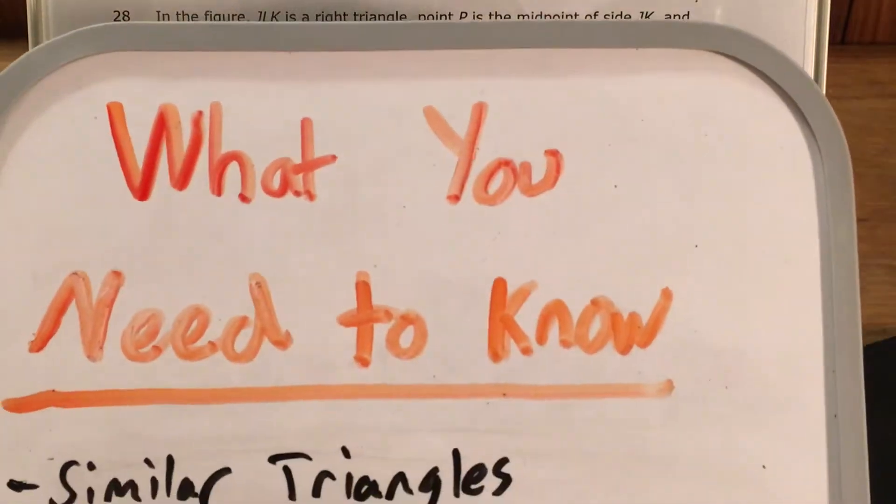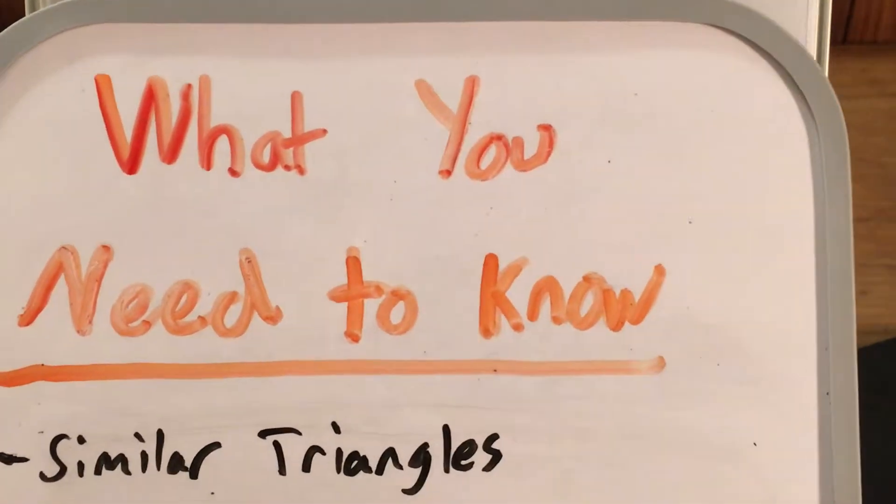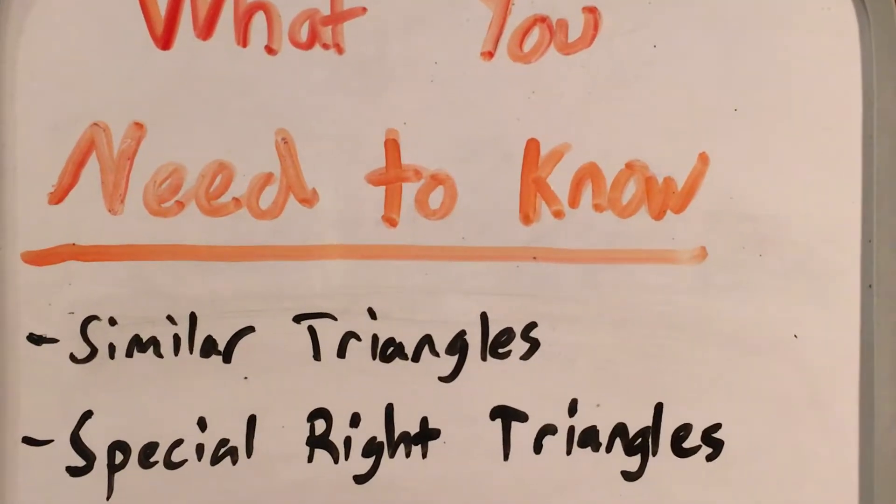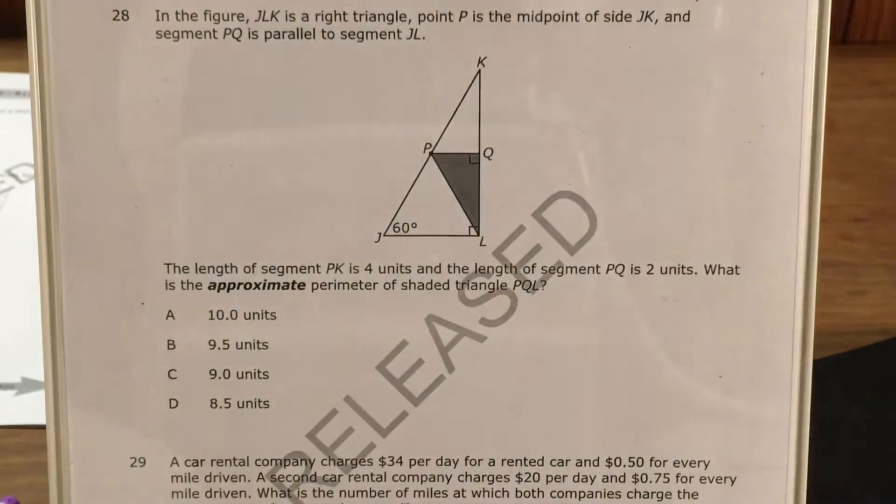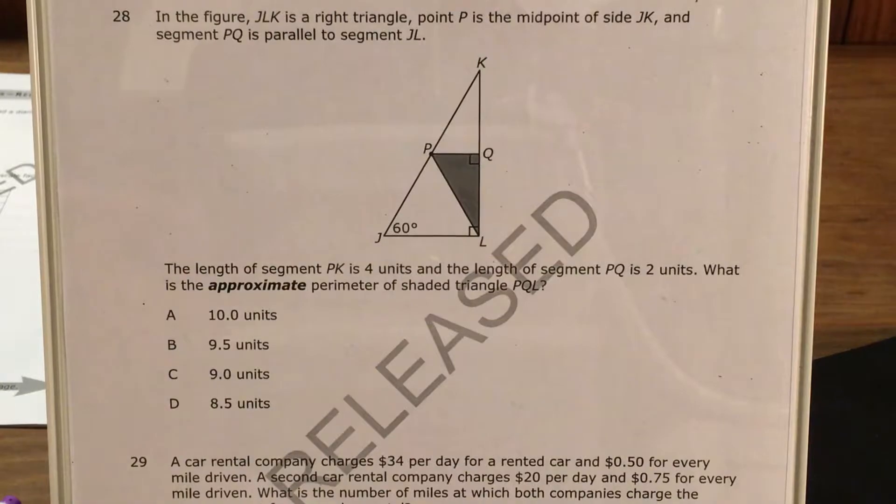Now this question is a doozy. It covers a lot of geometry including ideas of similar triangles, special right triangles, and the Pythagorean theorem. There's a lot to cover here, so let's go ahead and get started.